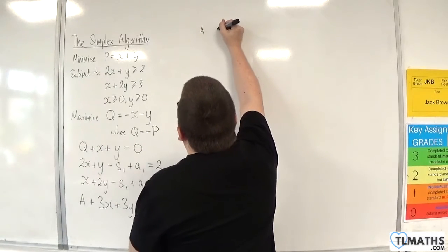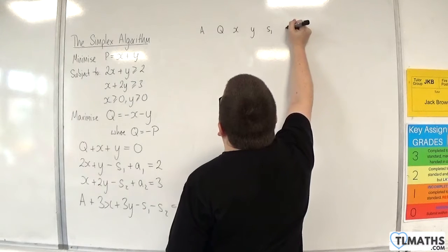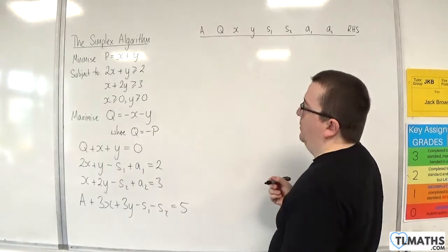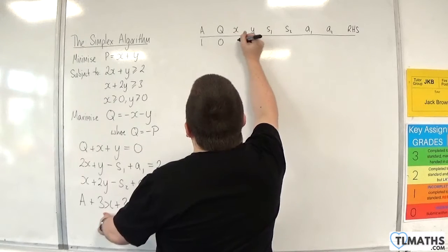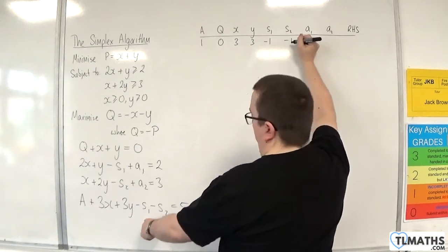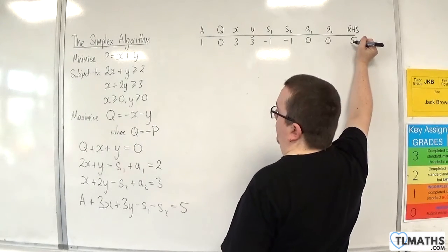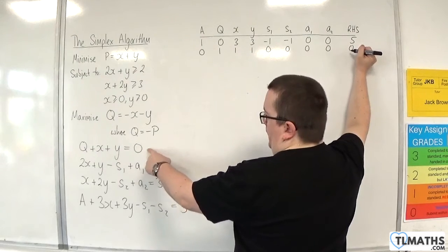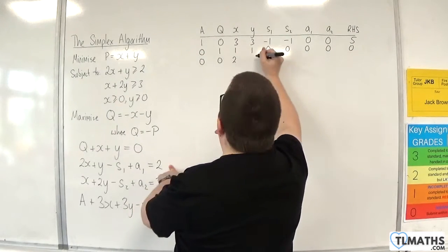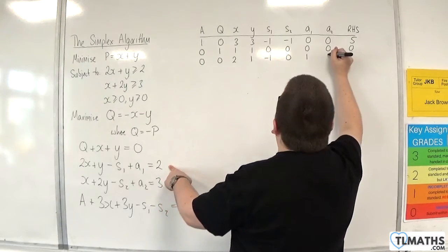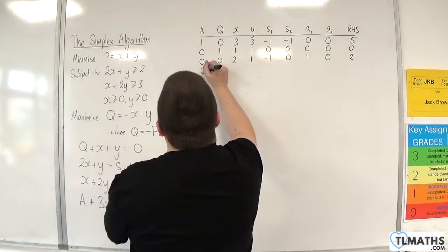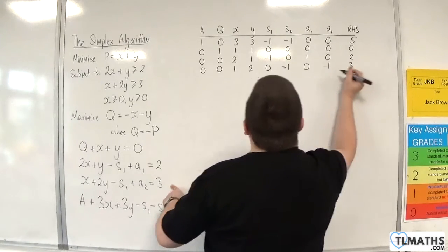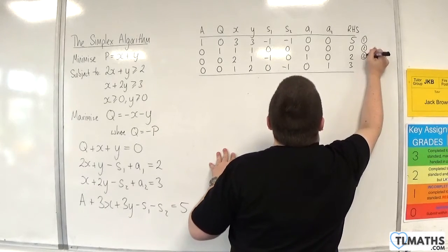Let's set up the initial tableau with columns: A, Q, x, y, s1, s2, a1, a2, and the right-hand side. Row 1: 1, 0, 3, 3, -1, -1, 0, 0, 5. Row 2: 0, 1, 1, 1, 0, 0, 0, 0, 0. Row 3: 0, 0, 2, 1, -1, 0, 1, 0, 2. Row 4: 0, 0, 1, 2, 0, -1, 0, 1, 3.